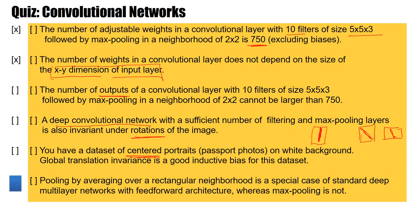Final question: pooling by averaging over a rectangular neighborhood is a special case of standard deep multi-layer networks with feedforward architecture, whereas max pooling is not. Do you think that is correct? If so, raise your hand now. And yes, this is correct.